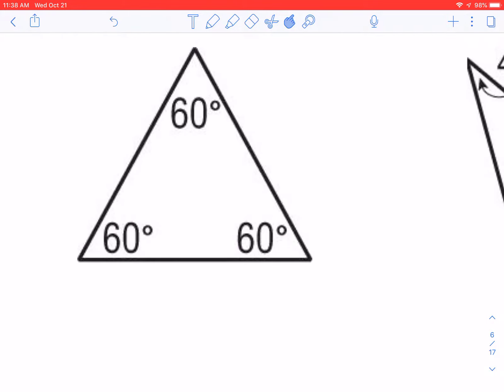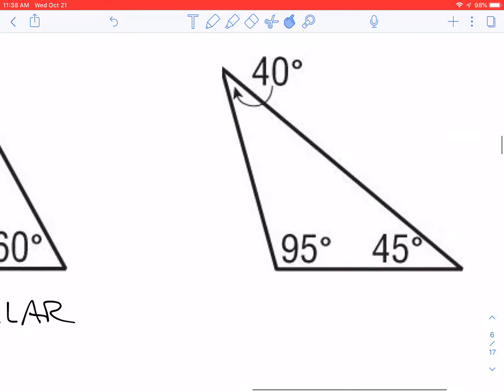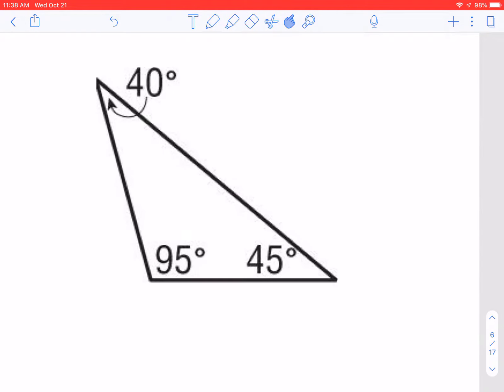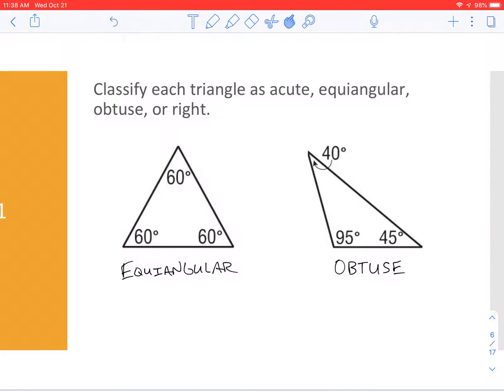Let's try a couple more. If I look here, all the angles are the same. They are equal. So, equiangular. And then, if I come over here, I see 40 is acute, 45 is acute. 95 is greater than 90. It's an obtuse angle. So therefore, it is an obtuse triangle. So those are the four that you need to know. Acute, equiangular, obtuse, or right.